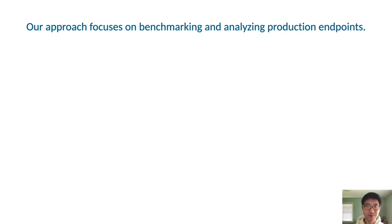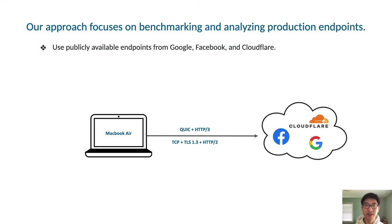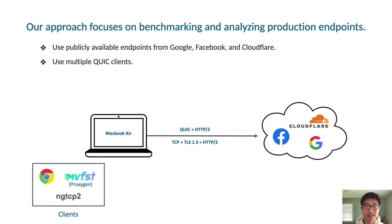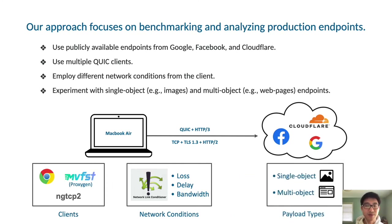Our approach focuses on benchmarking and analyzing production endpoints. This entails first using publicly available production endpoints from Google, Facebook, and Cloudflare — endpoints that support both HTTP/2, which runs on top of TCP, and HTTP/3, which runs on top of QUIC. Second, we use multiple QUIC clients such as Google Chrome, Proxygen (Facebook's QUIC client), and NGTCP2, an open source QUIC library. Using multiple QUIC clients allows us to gauge the impact of the client on QUIC performance. Third, we employ different network conditions from the client. And lastly, we experiment with both single-object and multi-object endpoints to analyze different aspects of the QUIC protocol.